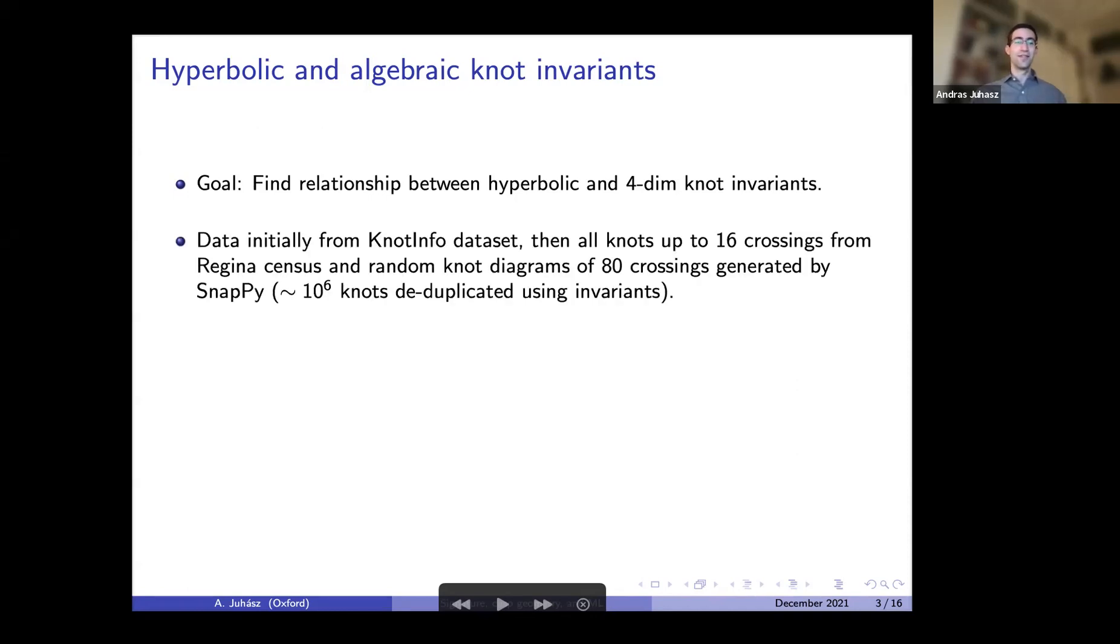The data that we looked at initially was from the KnotInfo dataset, which contains knots up to 12 crossings, and then later the Regina census, which has knots up to 16 crossings. And then we also generated random knot diagrams using SnapPy of 80 crossings when you apply SnapPy simplify. Of course, you might have some duplicates, but you can get rid of these by using various knot invariants. So this was a data set of 10 to the 6 knots approximately.